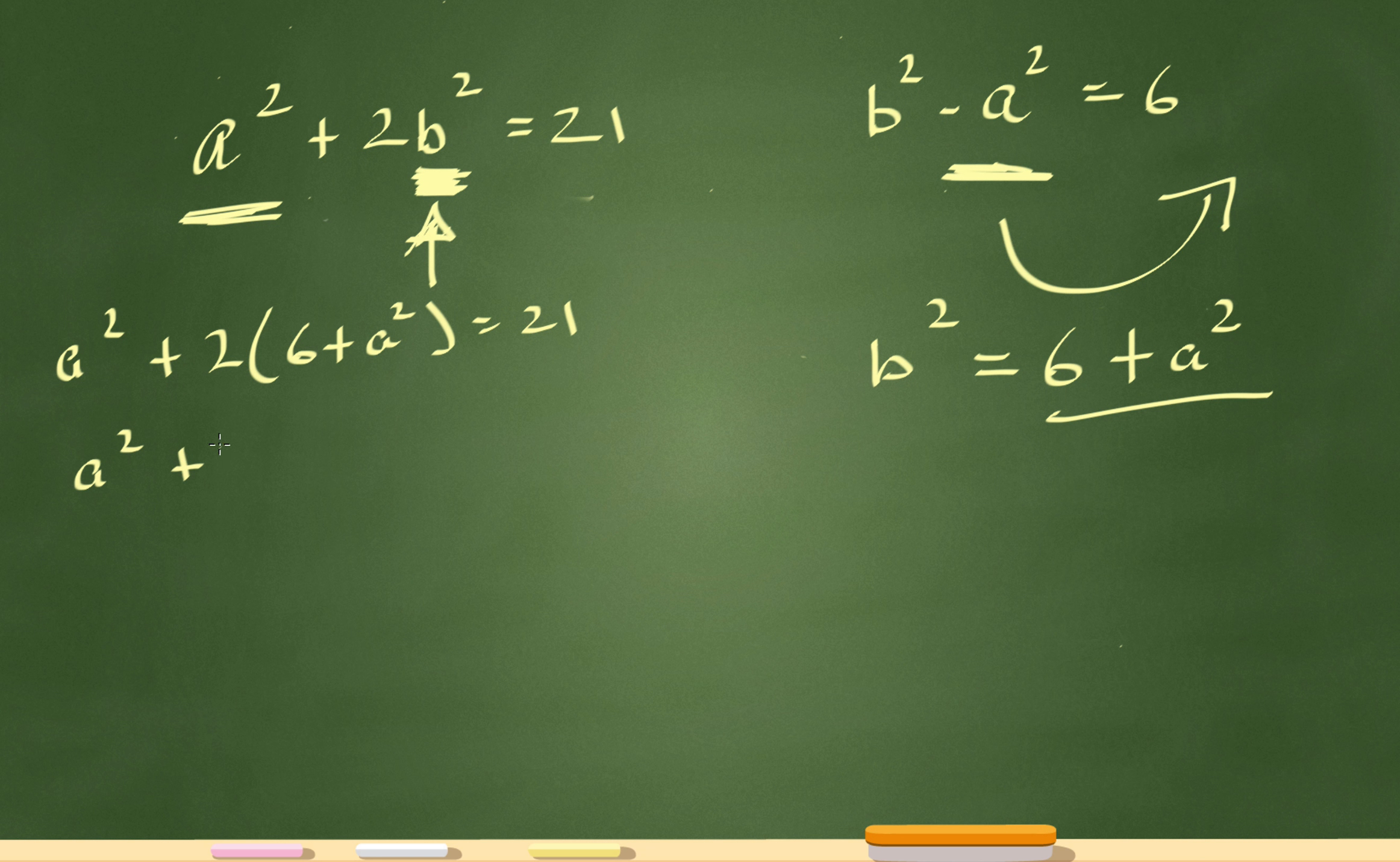So it's a squared plus 12 plus 2a squared equals 21. a squared plus 2a squared is 3a squared. So it's 3a squared plus 12 equals 21. Let's subtract 12. Then I'll have 3a squared equals 9.